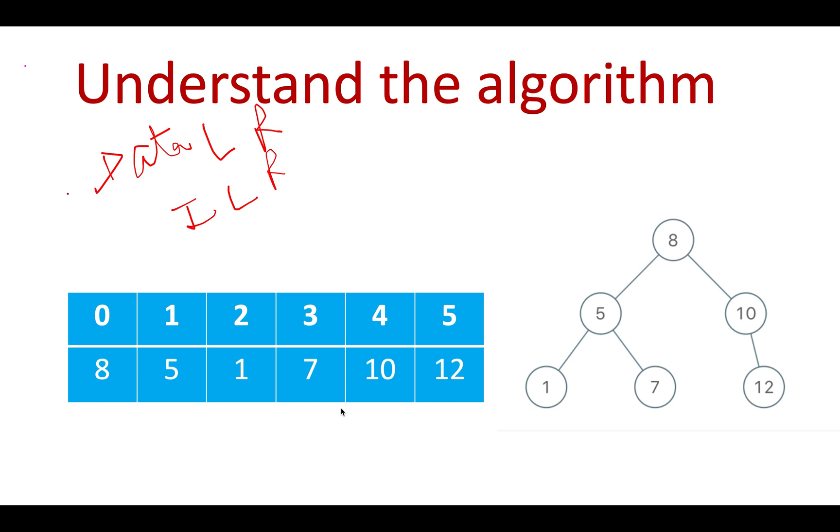The other property we need to remember is of BST: all nodes in the left subtree will be lower than 8, and all nodes in the right subtree of 8 will be higher than 8. These are the two properties we're going to use to build the algorithm.